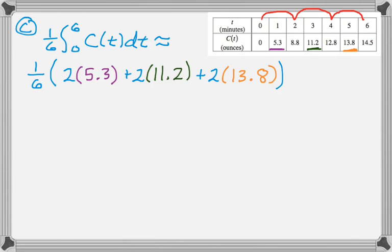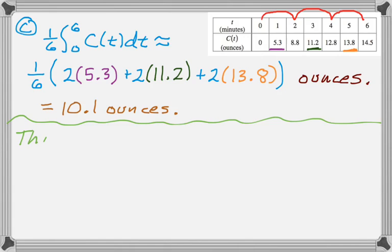And you can actually just toss some units on there, which would be ounces, and be done with that part. But I'm guessing most of you would actually work it out and get 60.6 ounces. So it's 60.6 ounces, but I'm asked to interpret this or explain what it means. So let's do that.